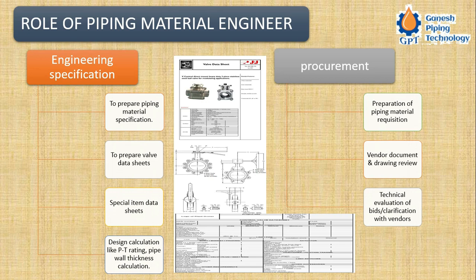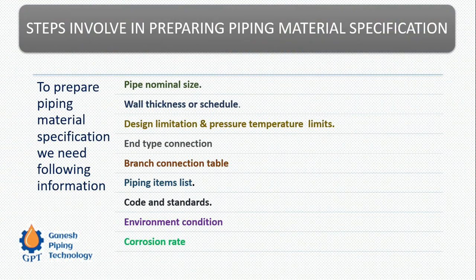The third part is technical bid evaluation. The vendor sends their offer with drawings, and a comparative study of different offers from different vendors is made, producing a technical grid evaluation. This helps identify which vendor will be selected. This completes the role of the piping materials engineer.